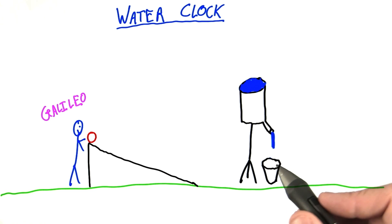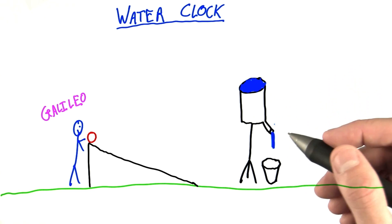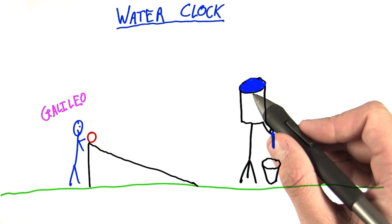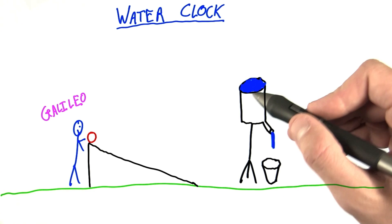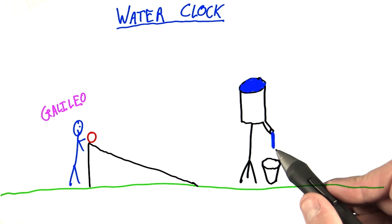But Galileo didn't have a stopwatch. Instead, he measured time with a water clock. A water clock was basically just a giant reservoir of water that he kept filled to the top, and that reservoir would leak at a constant rate.